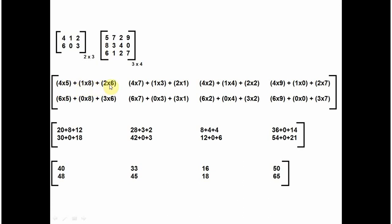So that is 4×5 plus 1×8 plus 2×6. For the first row, second column location, you take the first row and the second column: 4 multiplied by 7, plus 1 multiplied by 3, plus 2 multiplied by 1. For the second row, second column, you take the second row and second column: 6 multiplied by 7, plus 0 multiplied by 3, plus 3 multiplied by 1. When you multiply and add, you get the final value. That is the matrix multiplication.